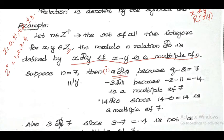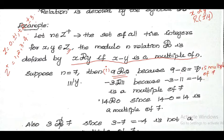For the first example, 9 is related to 2. We check: 9 minus 2 is equal to 7, which is a multiple of 7. So we can say that this condition is true. Therefore, 9 is related to 2 is true.